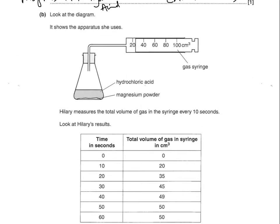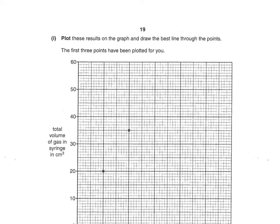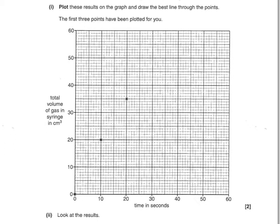Hillary measures the total volume of gas in the syringe every ten seconds. Plot the results on the graph and draw the best line through the points — the first three are already plotted. The remaining points: at 30 seconds it was 44-45, at 40 seconds it was 48, and at 50 and 60 seconds it levelled off at 50. Then draw a line of best fit, which is a smooth curve through all the points — don't join the dots. One mark for correct points, one mark for a smooth curve.